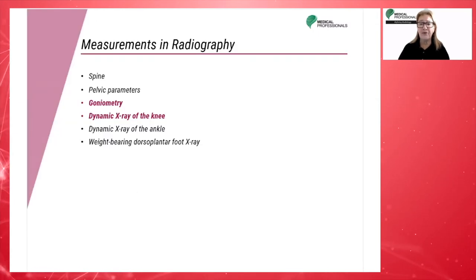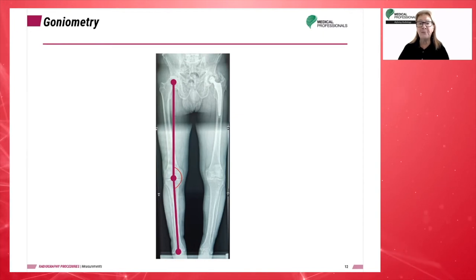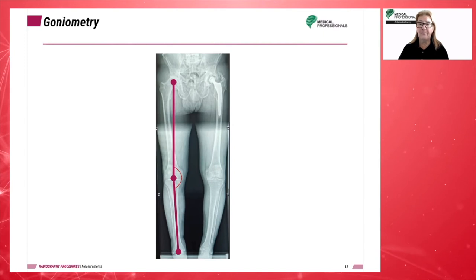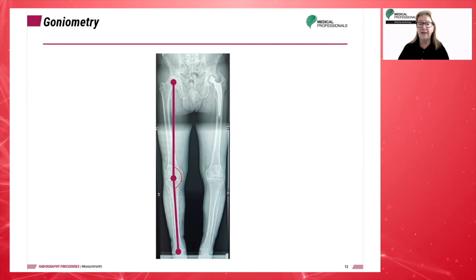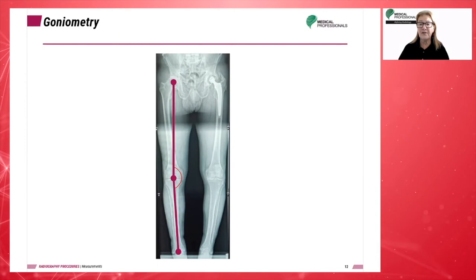Let's move on to goniometry and dynamic x-rays of the knee. Goniometry is a procedure for diagnosing abnormalities of the knees and legs. It aims to assess the progress of a pathology or the effectiveness of an orthopedic correction, and is used in preparation for orthopedic surgery on the knee. The femoral tibial angle is formed by the intersection of a line bisecting the tibia and a line bisecting the femur. When the angle exceeds 2 degrees in men and 3 degrees in women, valgus or varus is indicated.